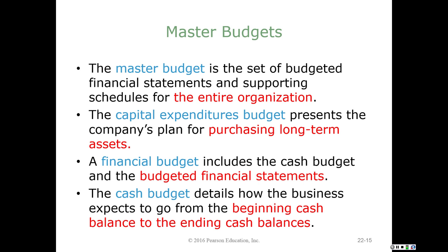We will also have the capital expenditures budget, which looks at our plan for new buildings or equipment — for example, if we are a university planning new dormitories, or if we are Starbucks planning new buildings or replacing equipment. We have a budget for those long-term assets, property, and equipment needed to grow and expand. The financial budget will include the cash budget and the budgeted financial statements. These are all part of the master budget, with capital expenditures and cash budgets serving as supporting schedules.